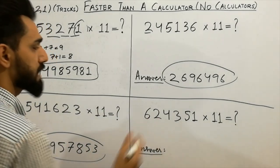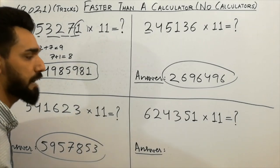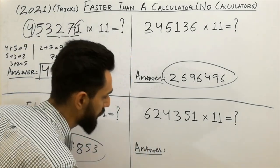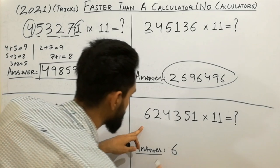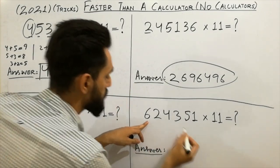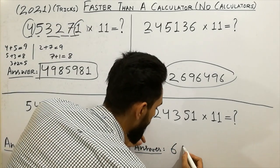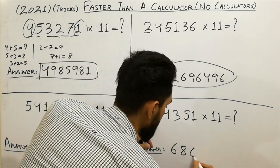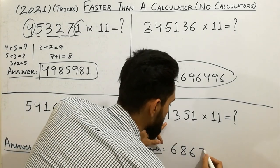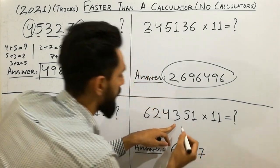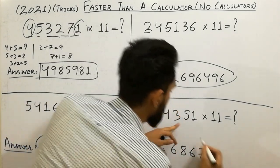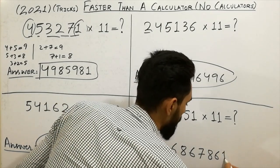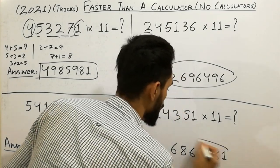And the last example, which I also showed in the thumbnail. Write the first digit: 6, as it is. Then 6 plus 2 equals 8. Next, 4 plus 2 equals 6. Then 4 plus 3 equals 7. Then 5 plus 3 equals 8. Then 5 plus 1 equals 6. And at the last, write the digit 1.